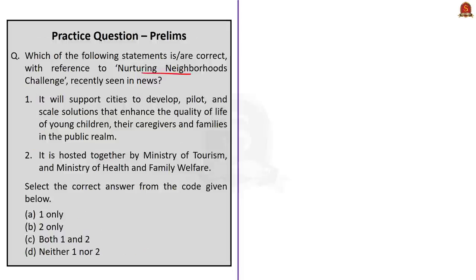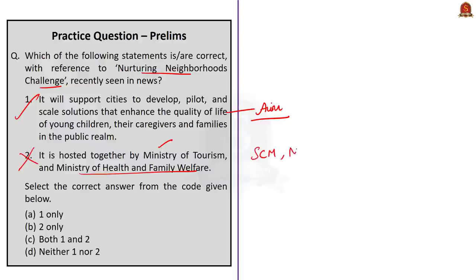The next question is about the Nurturing Neighborhoods Challenge. It is a two-statement question. The first statement speaks about the aim of the initiative — it is correct: it will support cities to develop, pilot, and scale solutions that enhance the quality of life of young children, caregivers, and families in the public realm. The second statement says this challenge is hosted by the Ministry of Tourism and Ministry of Health and Family Welfare — this is incorrect. It is hosted by the Smart Cities Mission of the Ministry of Housing and Urban Affairs in collaboration with the Bernard von Leer Foundation of Netherlands and the World Resources Institute India. The correct answer is option A, only statement 1.